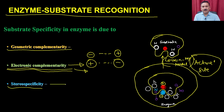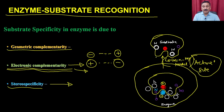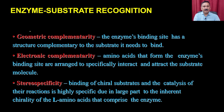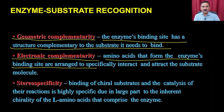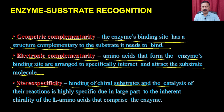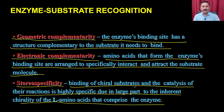Then we have stereospecificity. The enzyme prefers a particular type of stereoisomer in the substrate. Mostly enzymes work with the L-type of substrate rather than the D-type, because L-type isomeric molecules are predominantly present. The binding of chiral substrates and the catalysis of their reactions is highly specific due to the inherent chirality of the L-amino acids that comprise the enzymes.